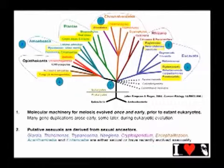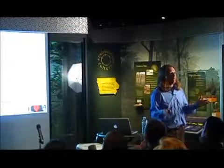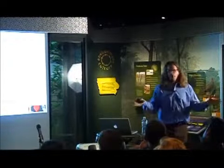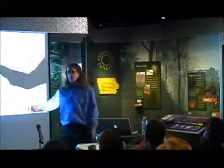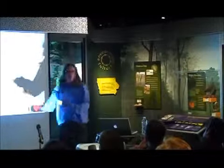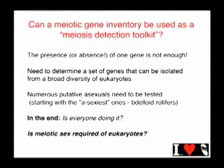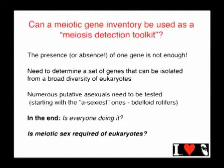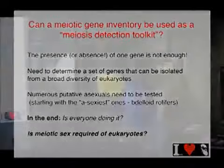They have the genes, or else they lost the ability to have sex very, very recently. Can we use this natural history? We know who has what genes. Can we use it as a way of going into an organism we don't know is capable of sex, to ask whether they're capable of sex? What we really want to know is: is everybody doing it? Can meiosis be lost? There are lots of asexuals we can look at, and this gets to that deep question: is sex actually a necessary feature of being a eukaryote?